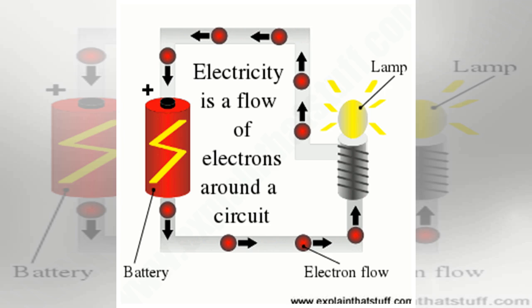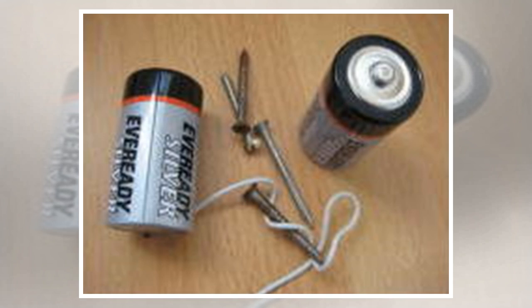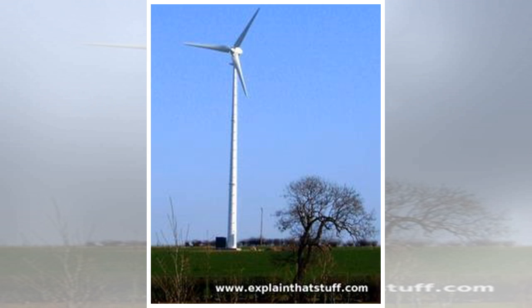One quick note: 120 volts and 230 volts are the nominal standard household voltages, the voltages you are supposed to have in theory. In practice, your home might have more or less voltage than this, for all sorts of reasons, but mainly because of how far you are from your local power plant or power supply.